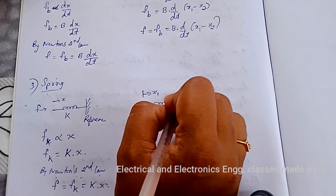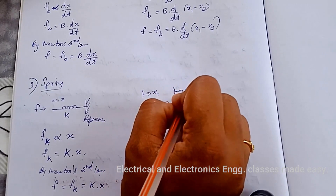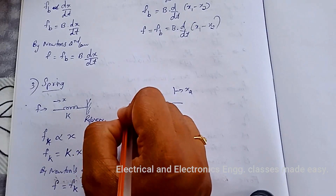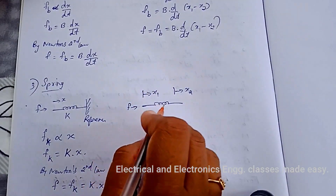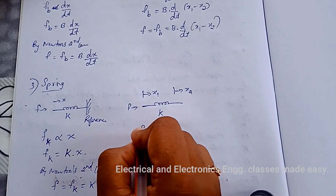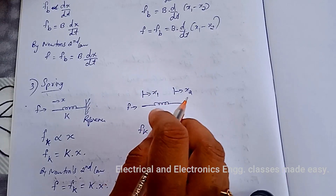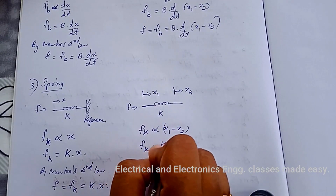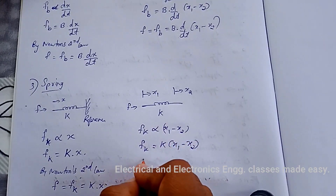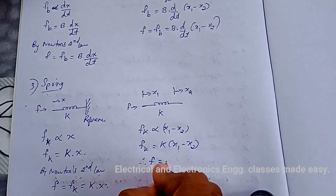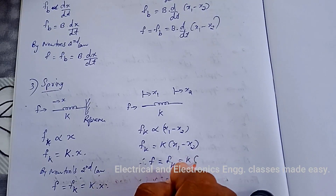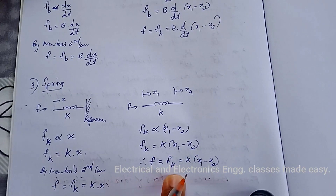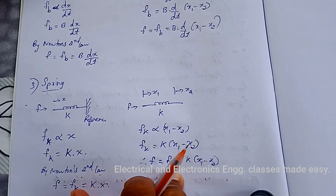When the spring has displacement at both ends, x1 and x2 are the displacements. The opposing force Fk is proportional to the differential displacement, so Fk = k·(x1 − x2). Therefore, F = Fk = k·(x1 − x2). This is the force balance equation of the idealized spring.